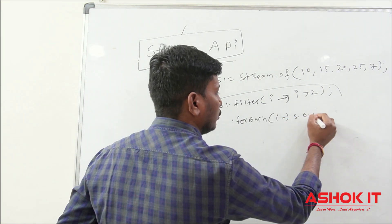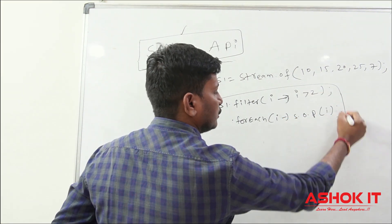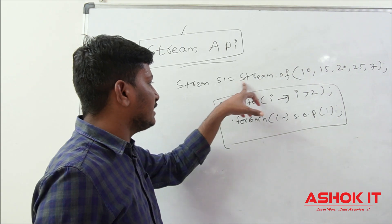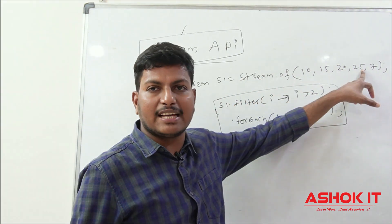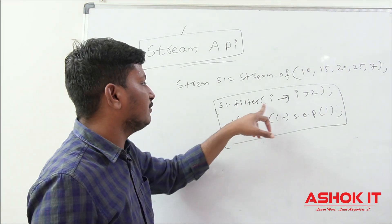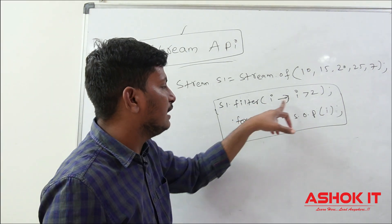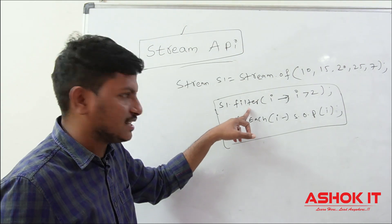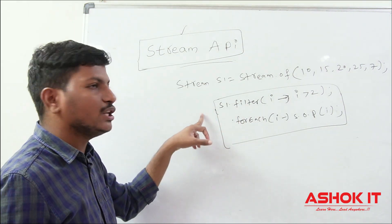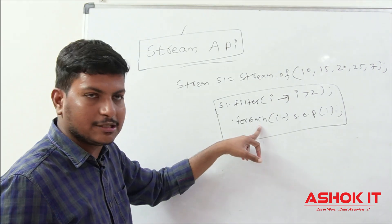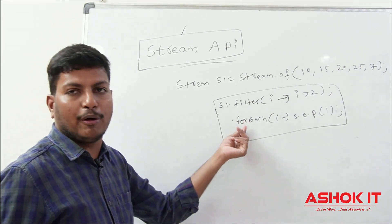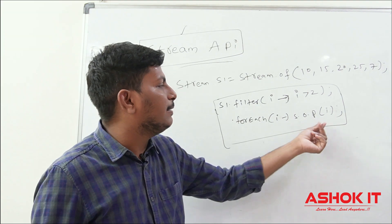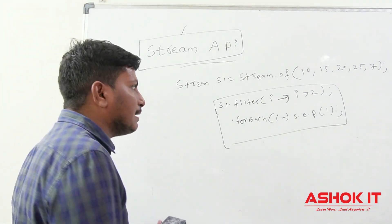Once we get the new stream as output, we can print that stream data using the `forEach` method: `System.out.println(number)`. So `s1` is the stream object created using the `of()` method. `s1.filter(i -> i > 2)` checks the condition — if satisfied the element is included, otherwise not. Then calling `forEach` on the result prints each element. The `forEach` method was also introduced in Java 1.8 as part of Iterable.